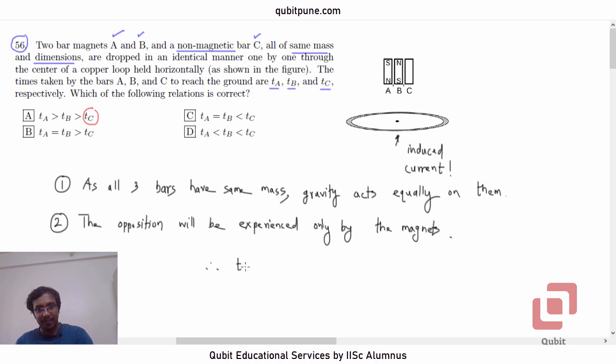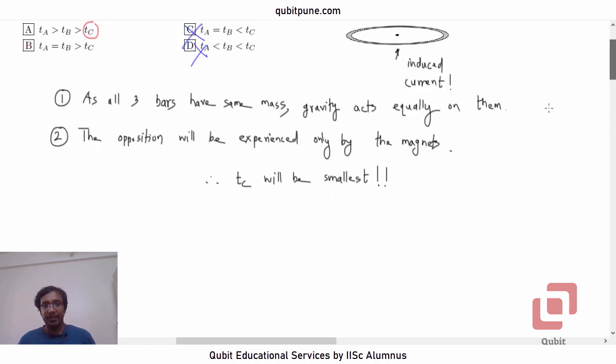Clearly TC will be smallest. TC will be smallest. So, options C and D are ruled out, because there TC is greatest. Now, point 3.